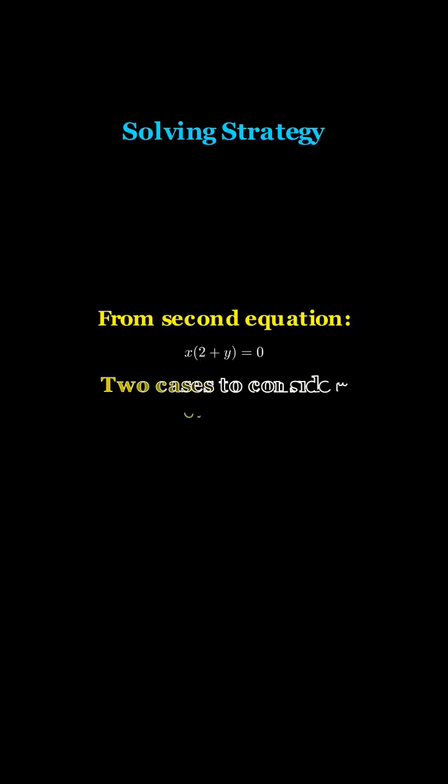We can solve this system by considering cases. From the second equation, x times 2 plus y equals zero, we have two possibilities: either x equals zero, or 2 plus y equals zero, which means y equals negative 2. We'll examine both cases systematically.